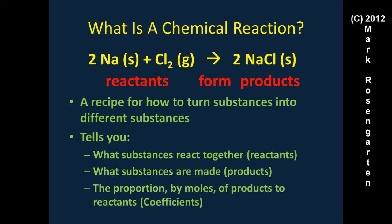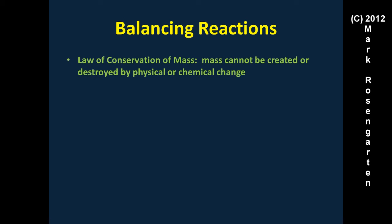We use coefficients to express the proportion by moles of products to reactants. A coefficient of one is simply not written — just like sodium is written as Na, not Na1. So here we have one mole of diatomic chlorine and two moles of solid sodium as reactants forming two moles of solid sodium chloride. To balance reactions, keep in mind the law of conservation of mass: mass cannot be created or destroyed by physical or chemical change.